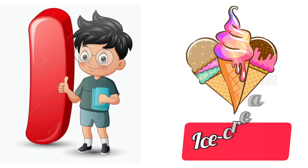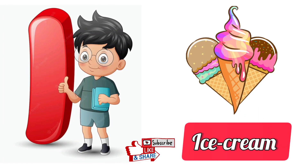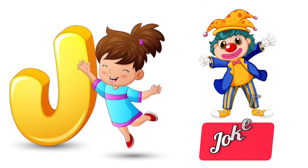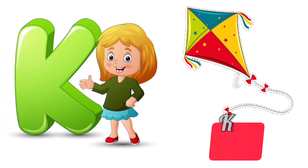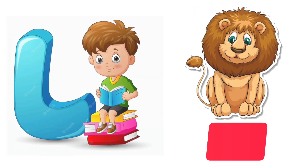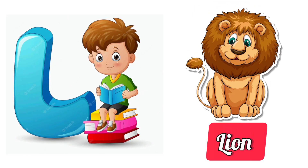I for Ice Cream. J for Jogger. K for Kite. L for Lawn.